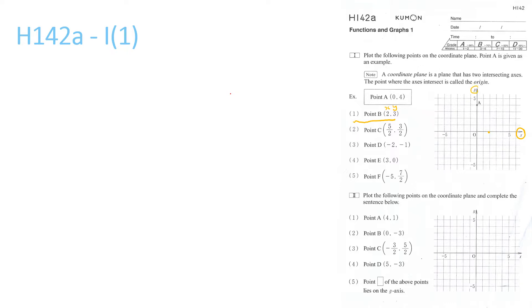Then on the y-axis, 1, 2, 3 — make a point there. Then you find where those two points meet on the positive plane, and it's right here. So your first point is going to be there; don't scribble it in like I did.